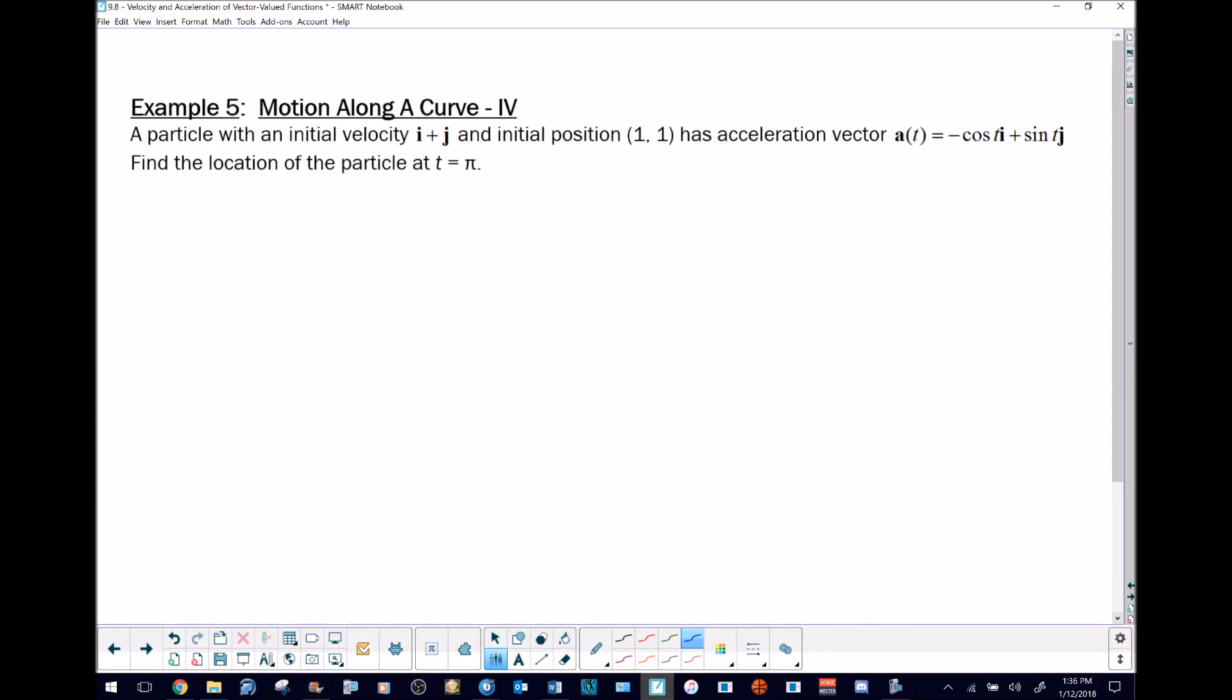We're going to say our acceleration vector is what we're starting with. We're going to take this and integrate it two times to turn it into a position vector, but along the way we'll have to figure out the values of the constants of integration.